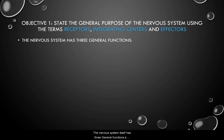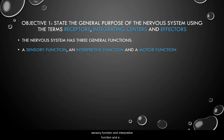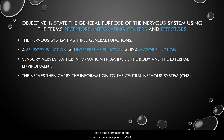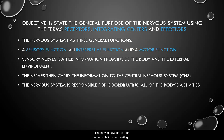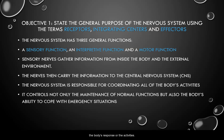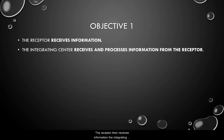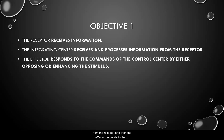The nervous system itself has three general functions: a sensory function, an interpretive function, and a motor function. Sensory nerves gather information from inside the body or the external environment, then carry that information to the central nervous system, or CNS. The nervous system coordinates the body's response, controlling maintenance of normal functions and the body's ability to cope with emergency situations. The receptor receives information, the integrating center receives and processes that information, and the effector responds to the commands of the control center by either opposing or enhancing the stimulus.